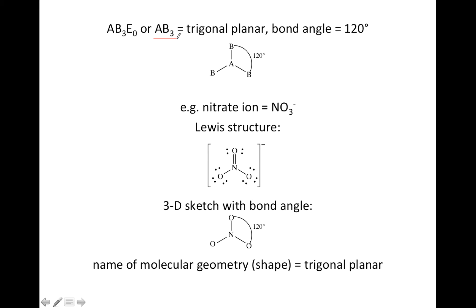Next example, AB3E0, or simply AB3, is a molecule with three atoms bonded to the center and no lone pairs. The shape is called trigonal planar, and the bond angle is 120 degrees. To minimize repulsion around the center atom, you're going to put your bonds 120 degrees away from each other — that's the best you can do to keep them apart.